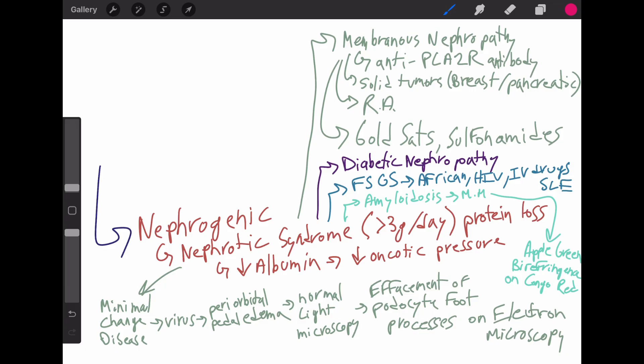Another cause of nephrotic syndrome can be membranous nephropathy. This is seen in adults. Causes include anti-PLA2R antibodies. Also, solid tumors, such as breast or pancreatic, can cause this. Autoimmune diseases, such as rheumatoid arthritis, and drugs, such as gold salts or sulfonamides, can also induce membranous nephropathy.